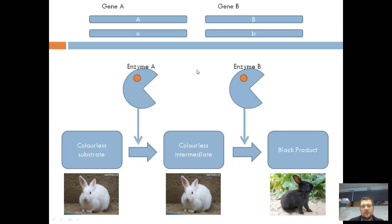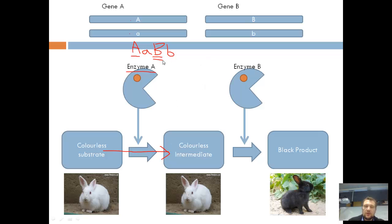Let's change the situation. Here we have a different genotype — big A, little A on one homologous pair of chromosomes, and big B, little B on the other pair. In this situation, we've still got a big A, so we can still make enzyme A, which means we can still convert the first chemical into the intermediate. And because we've still got big B, we can still make enzyme B, meaning we can still convert that chemical into the final product. So an organism carrying these alleles will still have the black phenotype.